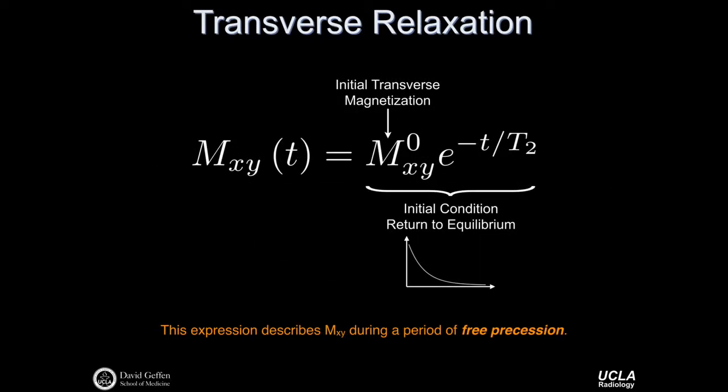So we should also consider what happens to the transverse magnetization. And it looks similar, but a little bit simpler. And the transverse magnetization as a function of time looks as follows. We'll have some initial transverse magnetization. That is to say, after the application of an RF pulse, we could have some transverse magnetization, some presumably non-zero level of transverse magnetization. But that transverse magnetization is only susceptible to decay. It's only going to decay as a function of time, and the underlying tissue's T2. And so this initial condition is a decay condition. It decays down from some state after the perturbation by an RF pulse down towards zero. So this expression describes the transverse magnetization during a period of free precession. This is what happens to the transverse magnetization after it's been acted on by a series of RF pulses.